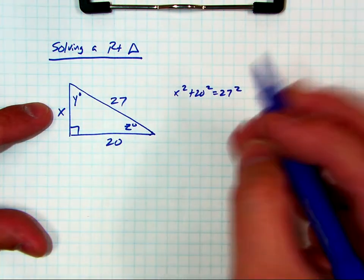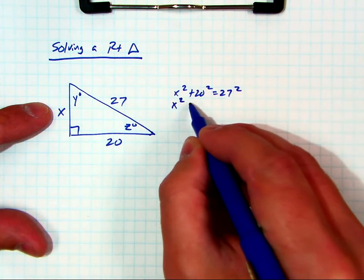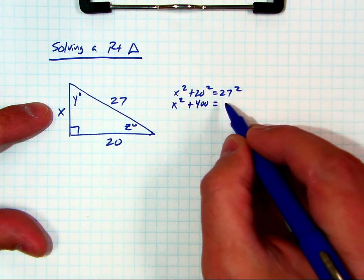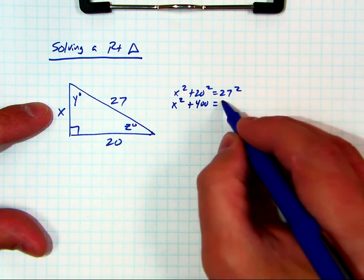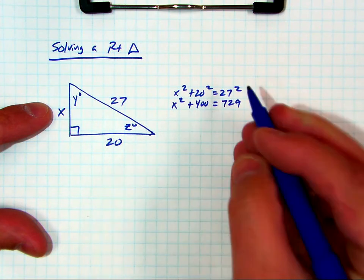You guys got calculators to help me out real quick? Somebody plug in 27 squared real quick for me. x squared plus 400 equals? Say it again. 729. Now if I subtract 400, I'm trying to isolate x. This is 329.